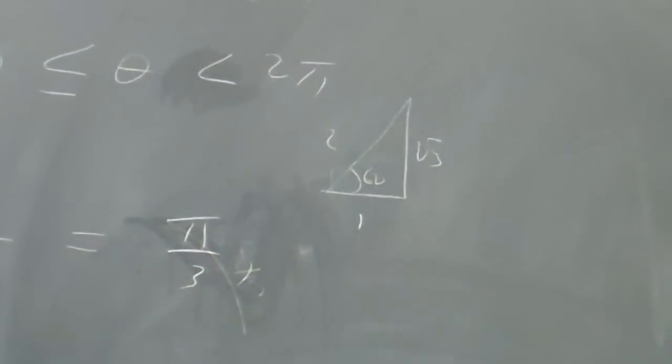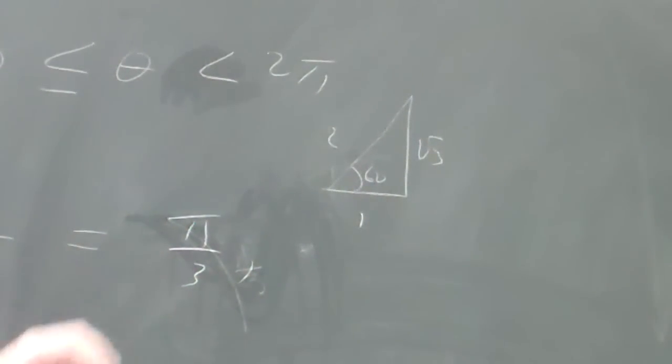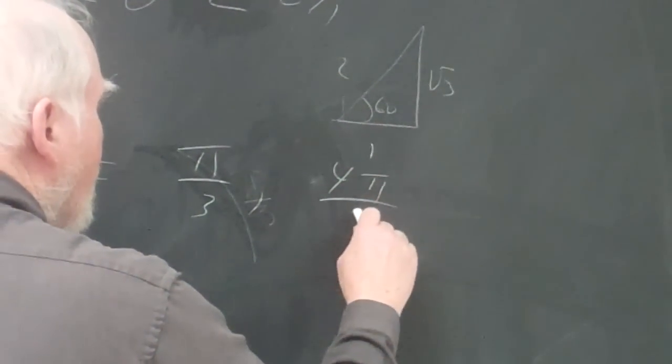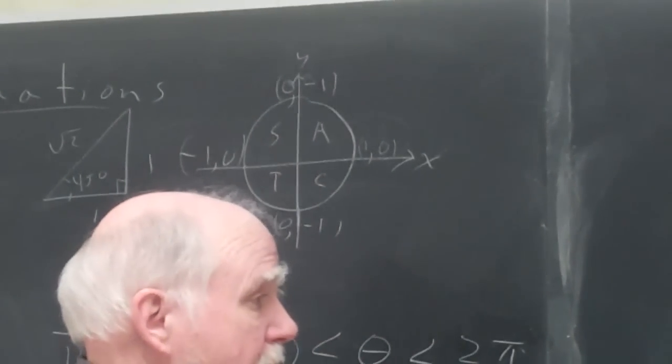The tangent is positive in the third quadrant, so 4 pi over 3 would give you that. If I took tangent of 4 pi over 3, that would also give me the square root of 3.